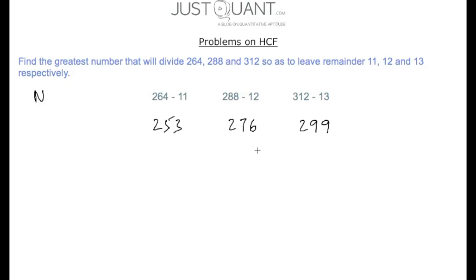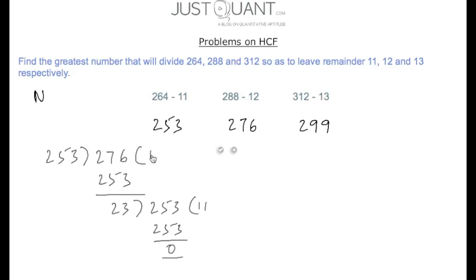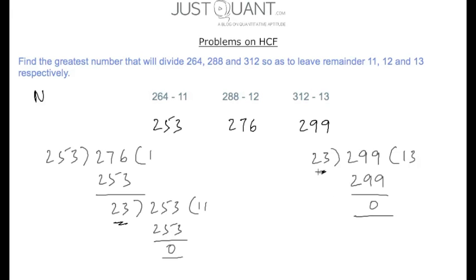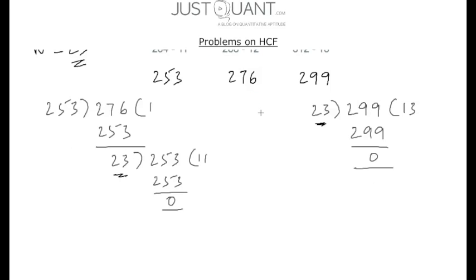Using the division method, the HCF of 253 and 276 is 23, and the HCF of 23 and 299 is again 23. Hence 23 is the greatest number that exactly divides 253, 276, and 299 so as to leave remainders 11, 12, and 13 respectively.